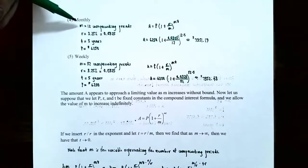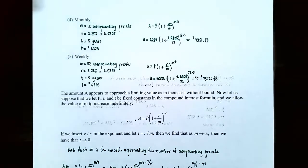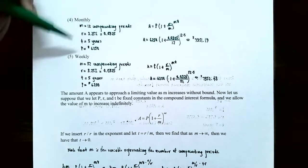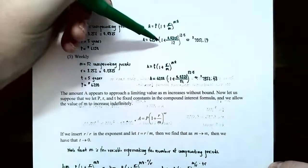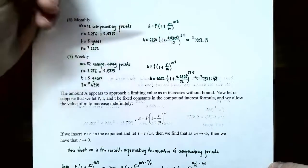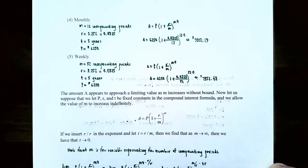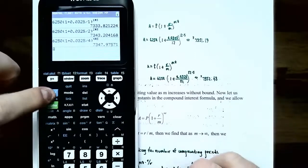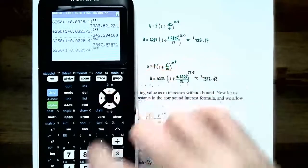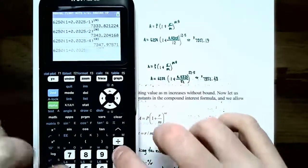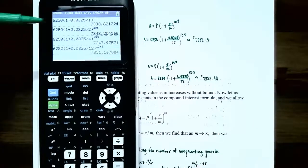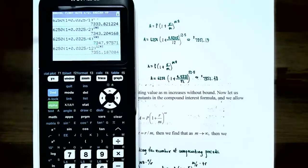Part four: compounded monthly — the most common type — means M = 12, compounded 12 times a year. Using the compound interest formula: A = 6250(1 + 0.0325/12)^(12×5), giving 60 total compounding periods. The accumulated balance is approximately $7,351.19.